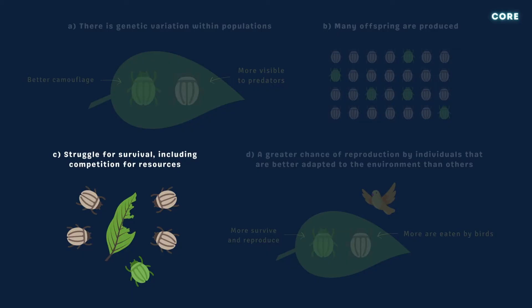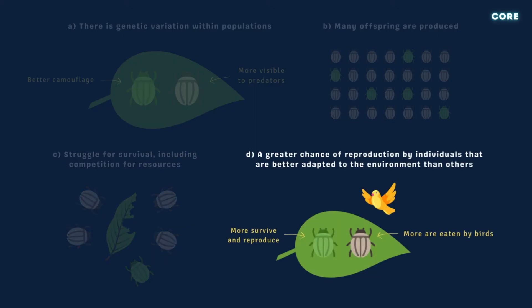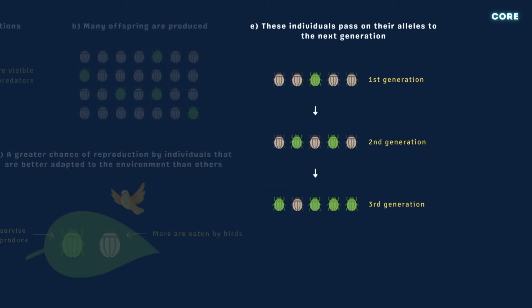This often results in intense competition for resources like food, water, territory, and mates. Organisms that possess advantageous alleles, or variations of genes that make them better suited to their environment, have a greater chance of surviving and reproducing compared to others. These individuals pass on their alleles to the next generation, resulting in, over many generations, an increase in the frequency of advantageous alleles and a decrease in the frequency of disadvantageous ones.